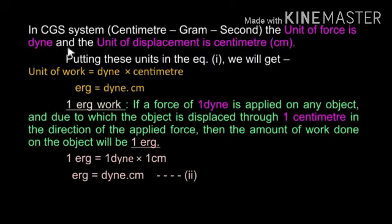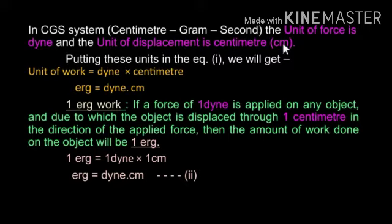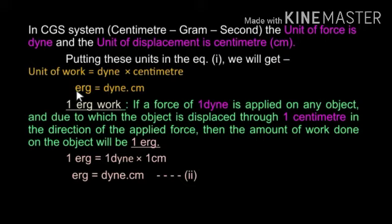Now we are going to study the CGS system. CGS stands for centimeter, gram, second system. The unit of force in the CGS system is dyne and the unit of displacement is centimeter (abbreviated as cm). Putting these units into equation number 1, we get: unit of work = dyne × centimeter. The unit of work in CGS is erg, which equals dyne centimeter.